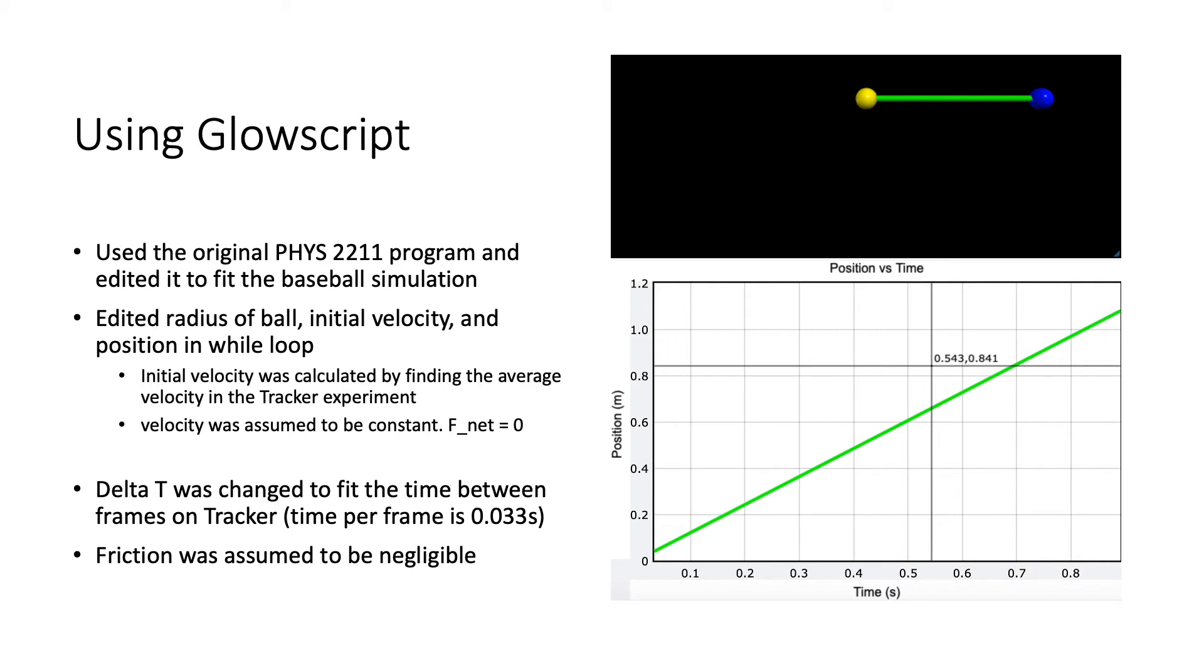I also edited the position because the original position is assumed to be 0, so I started it at 0.004 meters. On top of that, I changed the change in time to fit the time between the frames on Tracker. So the time per run through the while loop is 0.033 seconds, and because there is a zero net constant force, friction was also assumed to be negligible.